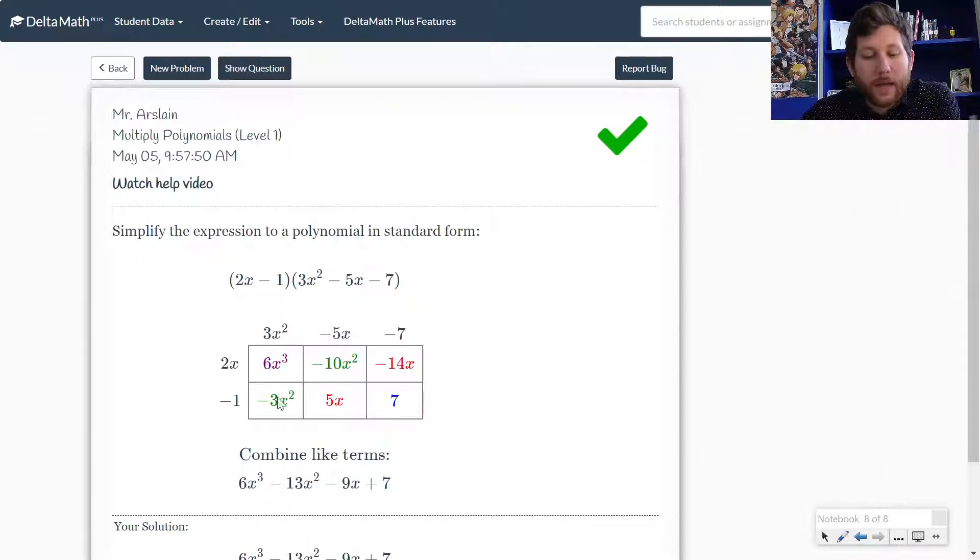but we'll just call it the box method here. So the nice thing about this is that when you add or combine like terms, they're always on your diagonals, okay? And as we go to trinomials times trinomials, that becomes helpful.